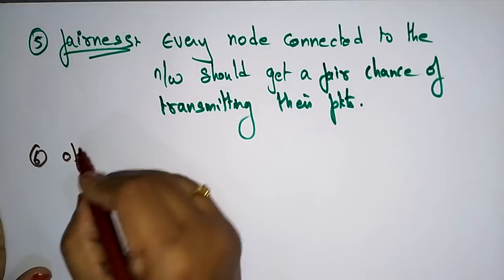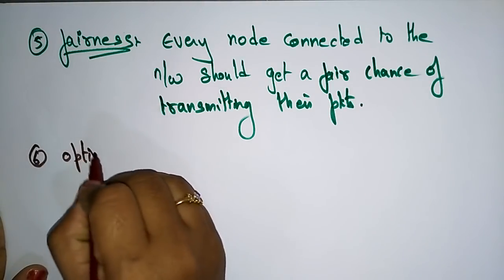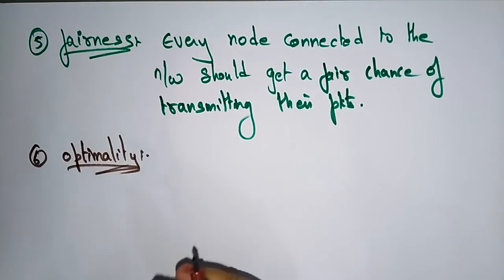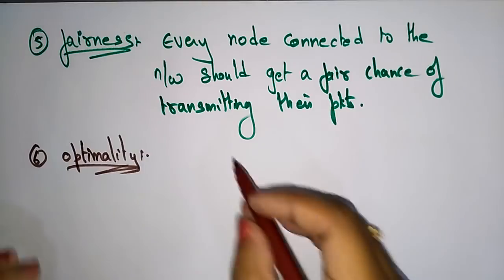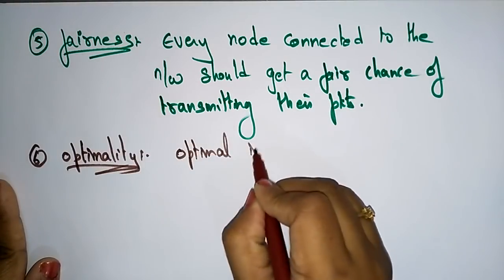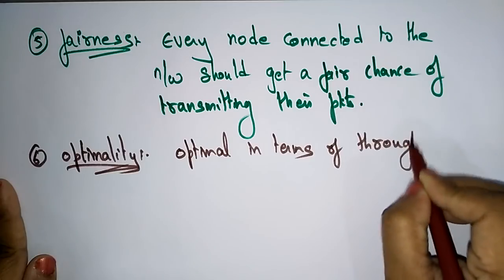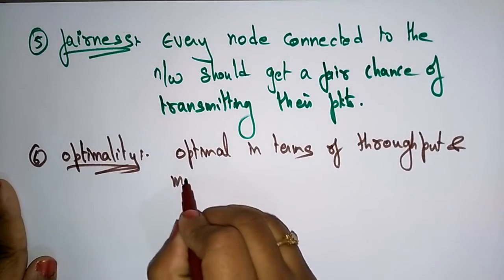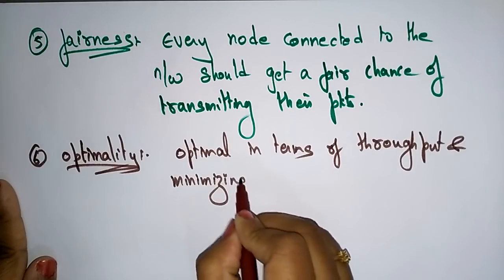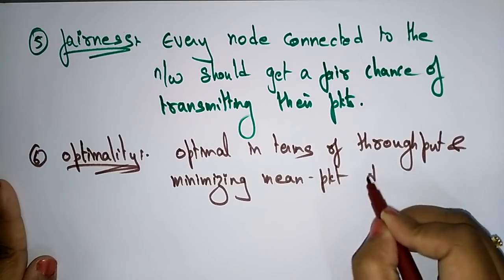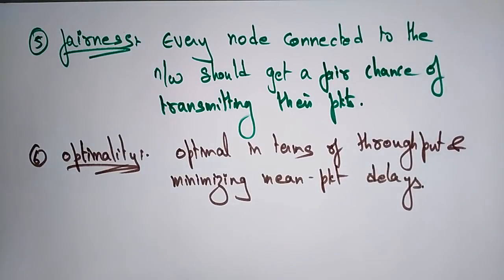The final goal is optimality. The routing algorithm should be optimal in terms of throughput and minimizing mean packet delays. These are the main goals of routing algorithms. Before discussing specific routing algorithms, it is important to understand what routing is and what the main goals of designing routing algorithms are.